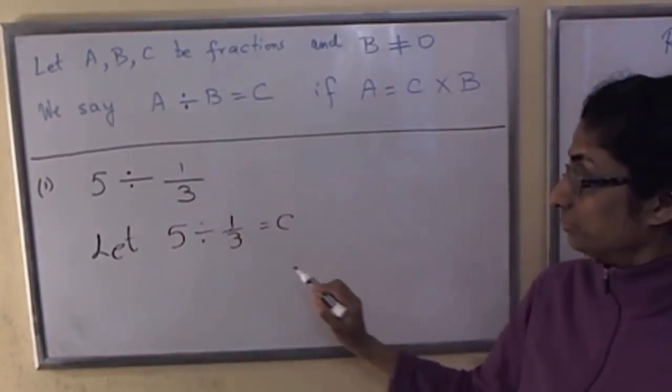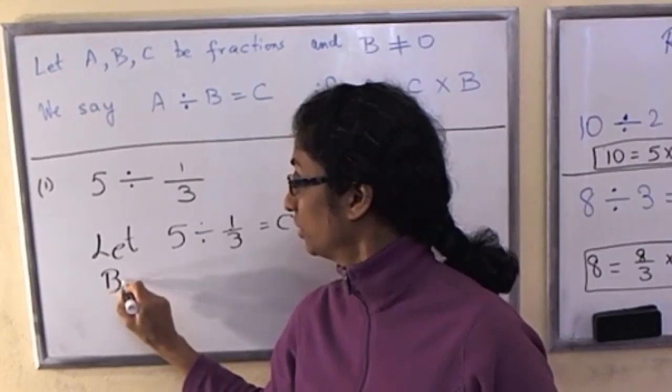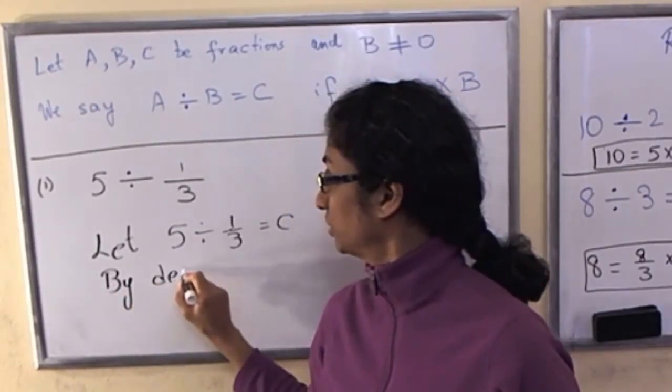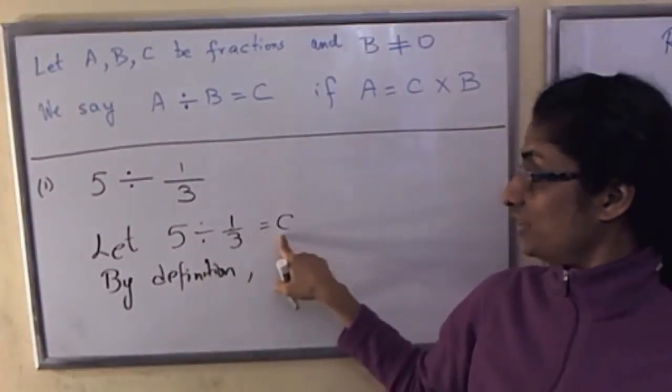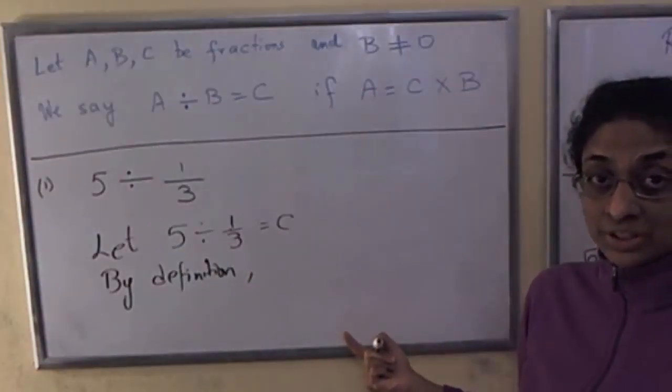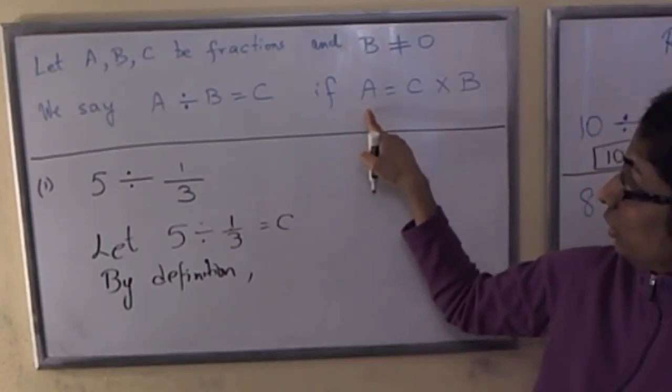By definition, and I'll write it here, by definition we can convert this division statement into a multiplicative statement. How do we do that? Follow this.